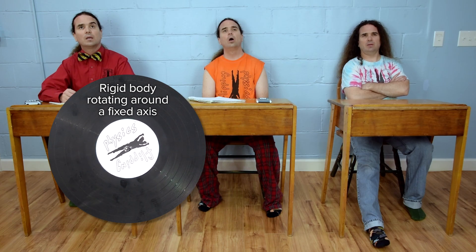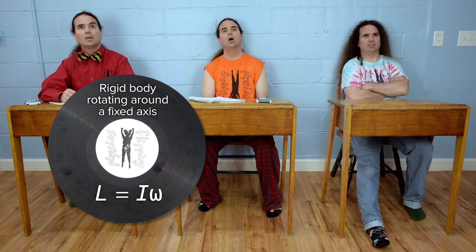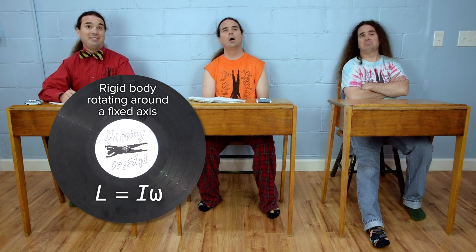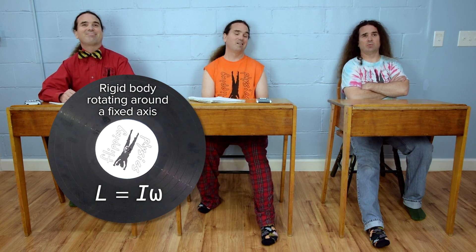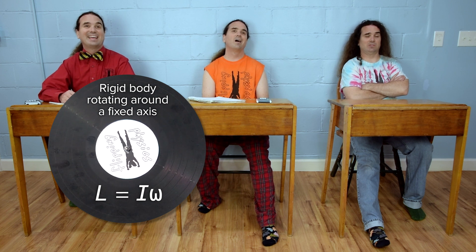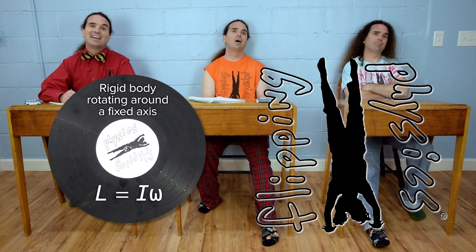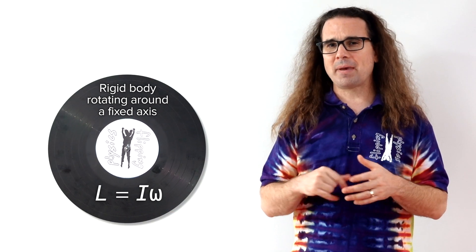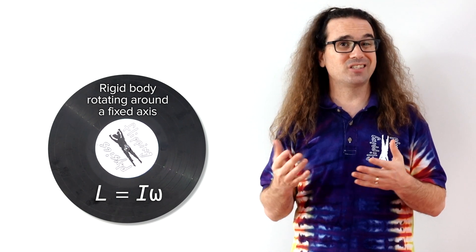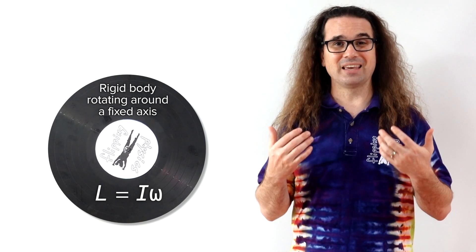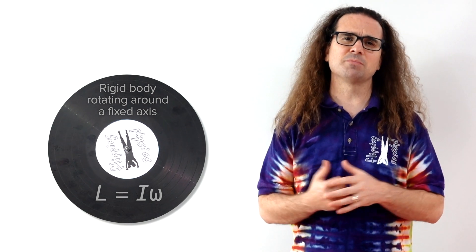Haven't we already worked with the angular momentum of a rigid body? It equals rotational inertia times angular velocity. Yes, but we said we are going to derive it. In an algebra-based physics class, we often just state what the equations are. However, in a calculus-based physics class, we derive everything instead. I think it's much better this way. Alright, back to the record.